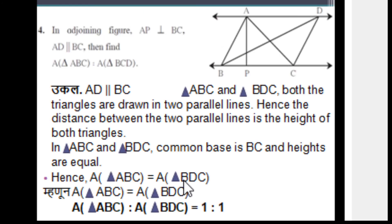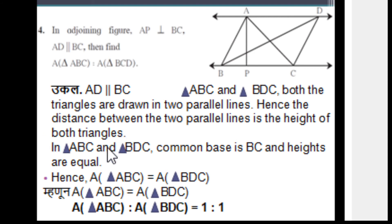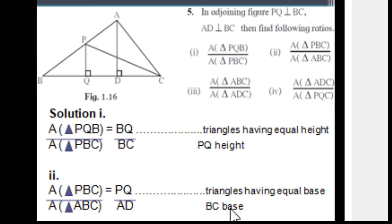Question 4: AD is parallel to BC and AP is perpendicular to BC. Whenever two triangles are drawn between two parallel lines, they have equal height — the distance between the parallel lines. Triangles ABC and BDC both lie between the parallel lines AD and BC, so their heights are equal. They also share the common base BC, so their areas are equal and the ratio is 1 : 1.